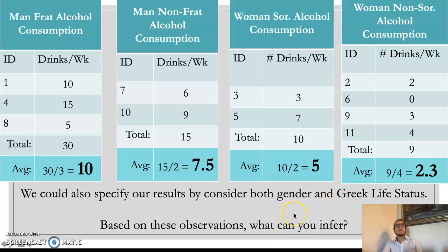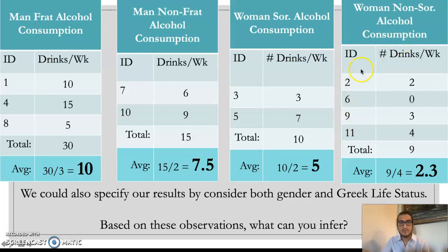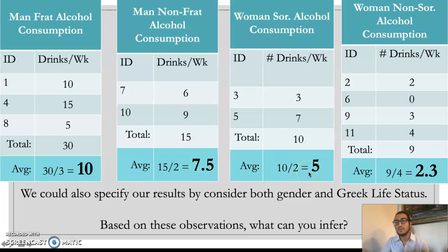We could specify our results even further by looking at how both gender and Greek life may impact alcohol consumption. Three participants were men in a fraternity, two were men not in a fraternity, two women were in a sorority, and four women were not in a sorority. Calculating averages for these subgroups: men in a fraternity consume 10 alcoholic beverages a week, men not in a fraternity consume 7.5, women in sororities consume 5, and women not in sororities consume 2.3 per week.